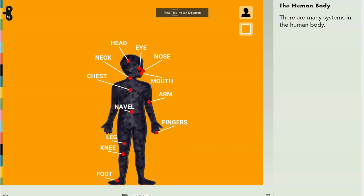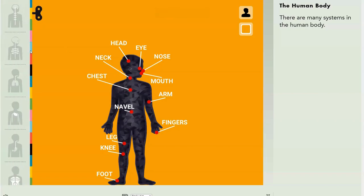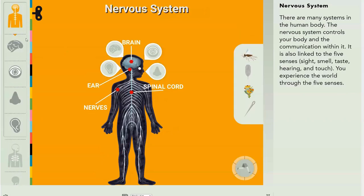We've already explored the skeletal, cardiovascular and digestive system. Which one should I explore? Let's see, the nervous system seems good. Ah yes, the classic nervous system.